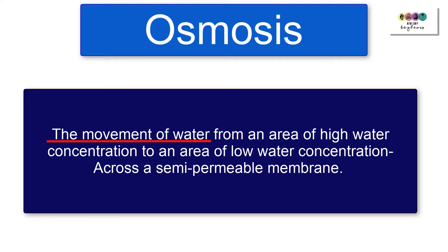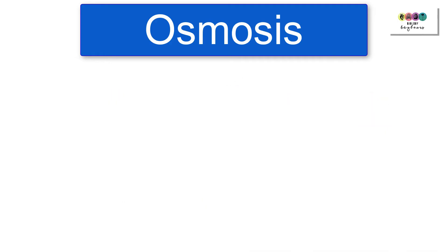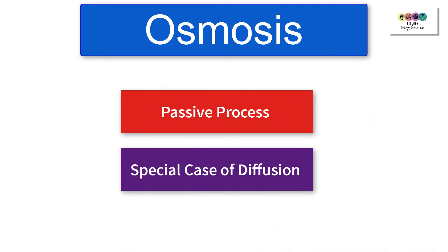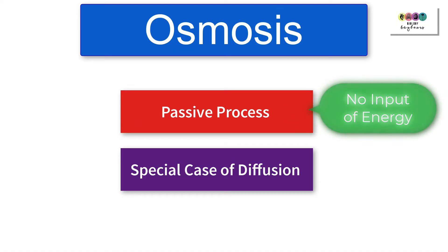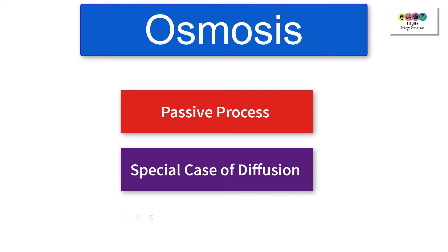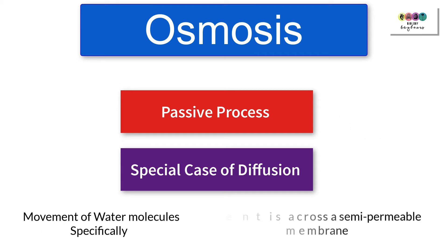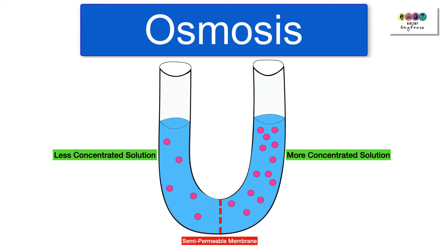Osmosis is defined as the movement of water from an area of high water concentration to an area of low water concentration across a semi-permeable membrane. It's really important that you know the definition word-perfectly. Like diffusion, osmosis is a passive process — it does not require energy input by the cell. In fact, it's a special case of diffusion involving only water molecules moving across a semi-permeable membrane.